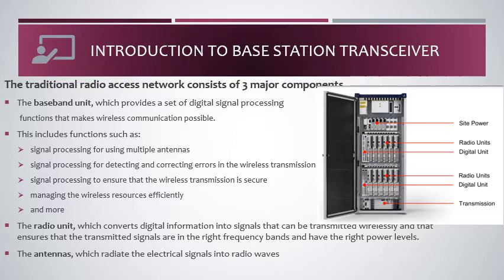Let's talk about the site power. In general, all telecom network equipment uses direct current (DC), which is minus 48 volts. The BTS is powered by site power connected to the base station, and from this site power the distribution of power to all units — including the radio unit and digital unit — is managed.